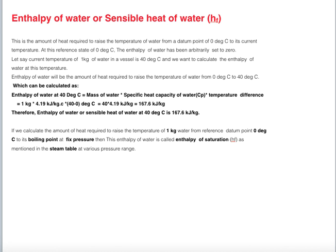The enthalpy of water HF is the amount of heat required to raise the temperature of water from a datum point of zero degrees centigrade to its current temperature. At this reference state of zero degrees centigrade, the enthalpy of water has been arbitrarily set to zero. For example, if the current temperature of 1 kg of water is 40°C, then the enthalpy of water is the heat required to raise its temperature from 0°C to 40°C. This is calculated as mass × specific heat capacity × temperature difference.